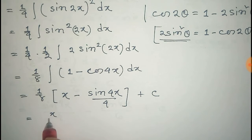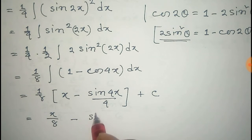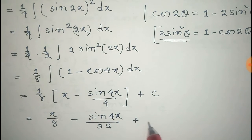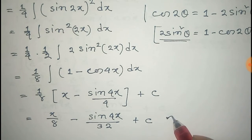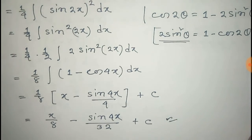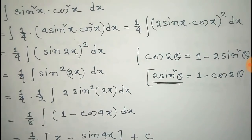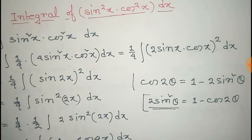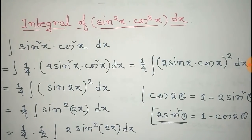That equals to x/8 − sin(4x)/32 + C. This is the integral of sin²x · cos²x dx.